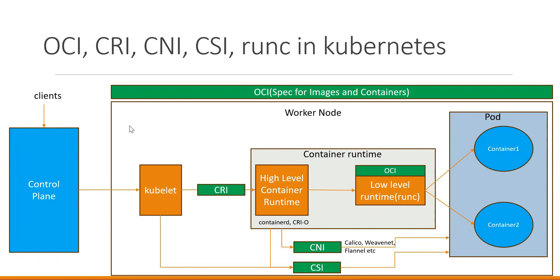Hello friends. In this video, we are going to discuss about some of the common terms we use in Kubernetes. Here we discuss about OCI, CRI, CNI, CSI and RunC.